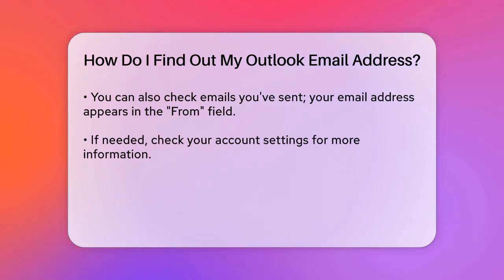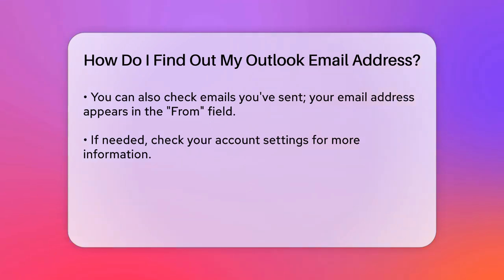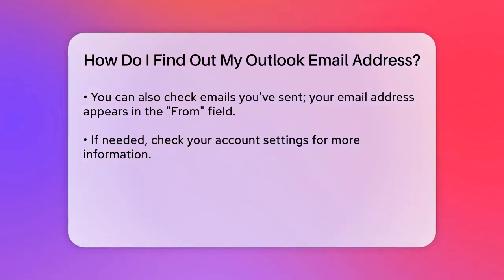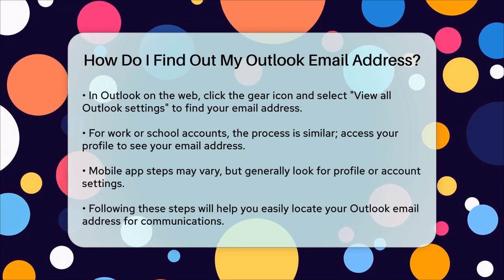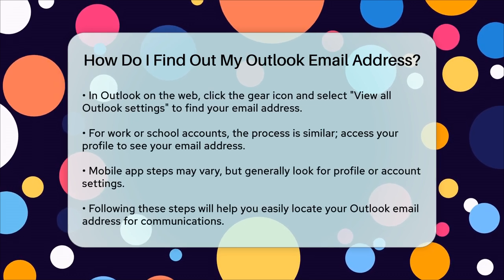If you're still having trouble, you can check your account settings. In Outlook on the web, go to the gear icon at the top right corner and select 'View all Outlook settings.' Here you'll find your account information, including your email address. For work or school accounts, the process is similar — open Outlook, go to your profile, and your email address will be displayed.